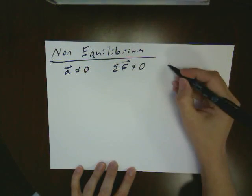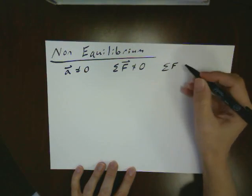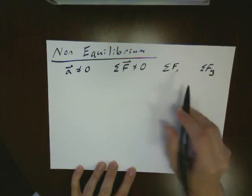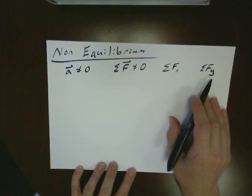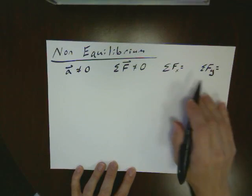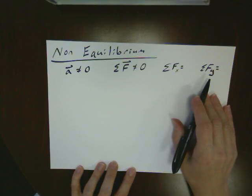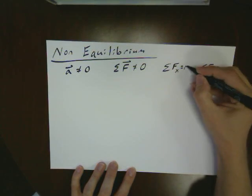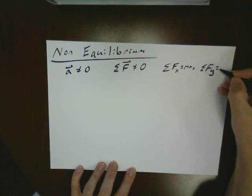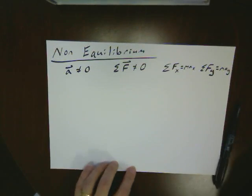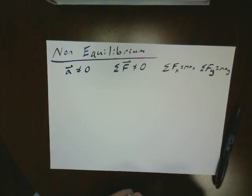Now, it doesn't really tell us immediately just by saying it's non-equilibrium what we have in terms of fx and fy. There could be equilibrium in one of these two, but there isn't equilibrium in both of them. So in general, there will be an ax and an ay, but it's possible that one of those cases might be 0.